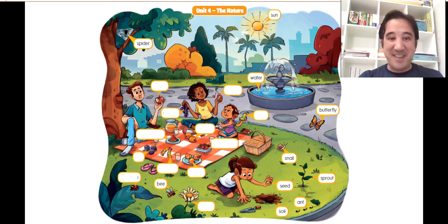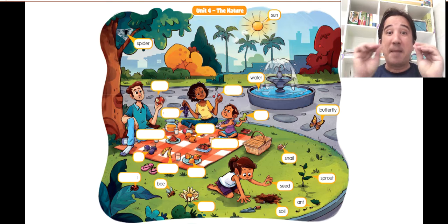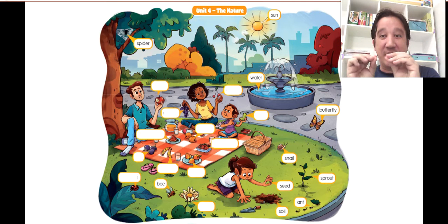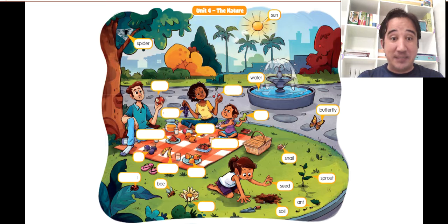There is a bee. Very good. Look, a bee. It's a bumblebee. That's right. Just like Transformers. Remember, the robot in Transformers is called bumblebee because he is black and yellow. He is yellow and black, just like this bee here.